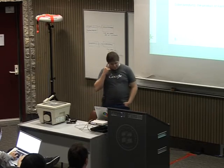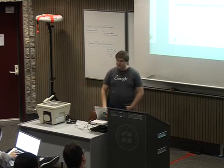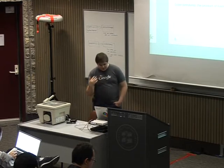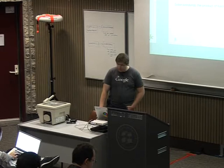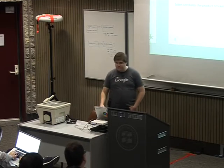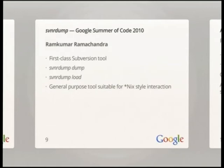As part of the 2010 Summer of Code project for Git, the aim was to build native support for subversion within Git. The main outcome was that Ramkumar Ramachandra ended up writing a tool for subversion which initially started as an out-of-tree patch, and later — as he began communicating with the subversion community — he garnered enough interest that they made it a first-class tool. SVNR dump is now a first-class tool in subversion, in the 1.7 release.